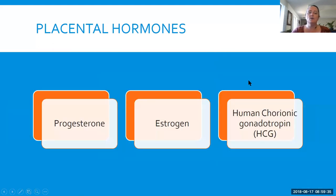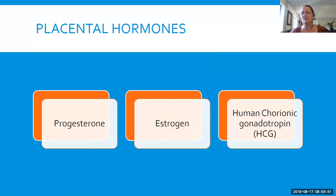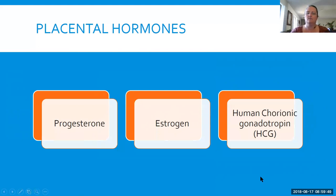There are hormones produced by the placenta: progesterone, estrogen, and HCG — human chorionic gonadotropin — which is what we are testing for when we do a pregnancy test. That's important to know.